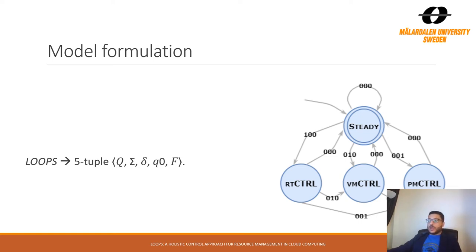Thus, as explained in this figure, the activation of the three controllers is triggered by a finite state automaton that is described in five tuples where the first tuple represents the states here. We have four states in the system. This is a steady state, or the state where we don't need to take any action. RT controller represents level one, VM controller represents level two, PM controller represents level three.